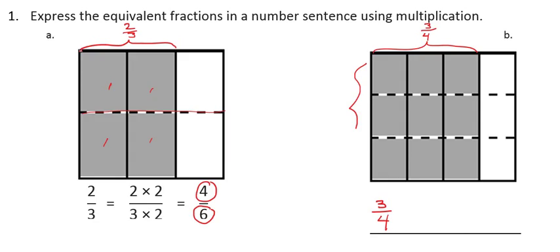Then I want to look to see how many rows we divided the model into. I divided it into 3 rows. That means, instead of having 3 pieces that are shaded, I'm going to triple that amount.